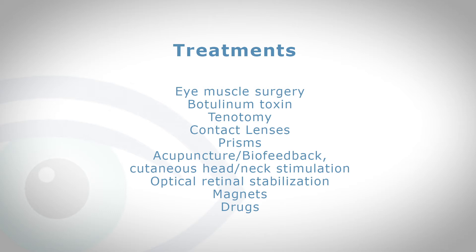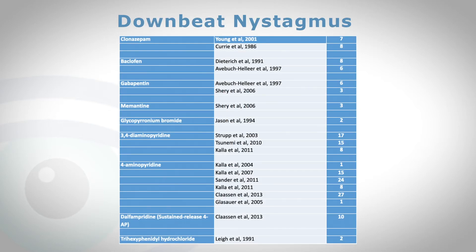Visual aids such as contact lenses and prisms have been tried. Acupuncture, biofeedback, and head and neck stimulation have apparently been useful for some people. One can try to stabilize the image on the retina, which is difficult but possible. Even magnets have been tried to reduce the eyes from wobbling. But certainly for acquired nystagmus, the most common approach has been to look at drugs, and we need to identify which type of nystagmus the patient has.